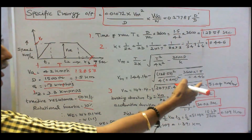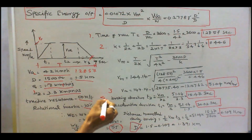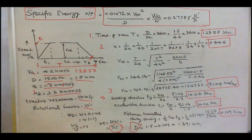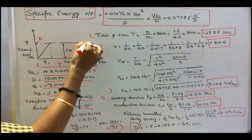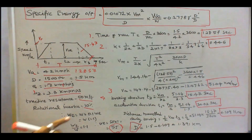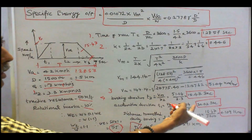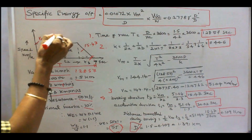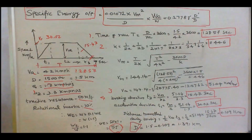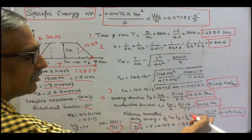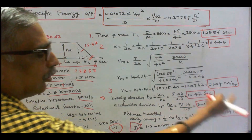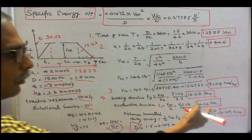The braking duration T3 = Vm / B = 51.04 / 3.3 = 15.47 seconds. The acceleration duration T1 = Vm / A = 51.04 / 1.7 = 30.02 seconds. The distance travelled during braking = 0.5 × Vm × T3 = 0.5 × 51.04 × (15.47 / 3600) = 0.109 km.